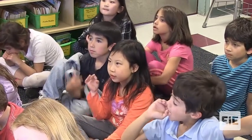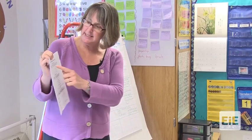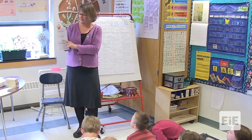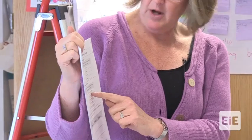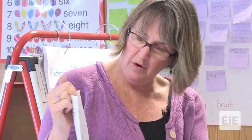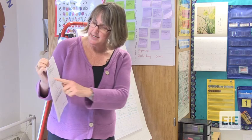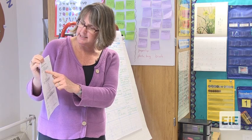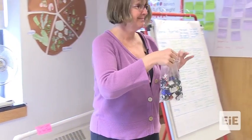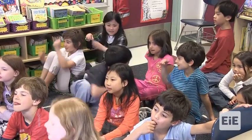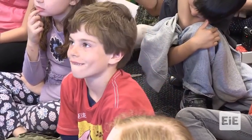On the last page of your packet there's a bridge design scoring sheet. For strength, it says: how many weights did your bridge hold before it failed? A score of one means it held 15 or fewer; a score of two means 15 to 29; a score of five means more than 60. For stability, it says: how many times did a car successfully roll across your bridge? It can go across one, two, three, or four times.